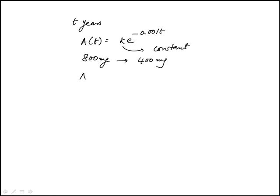So initial would be when t is 0, and this would be e to the power of minus 0, which is 1, and that needs to be 800. So essentially k is 800.